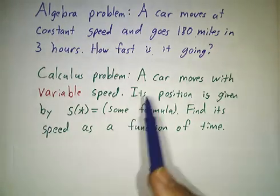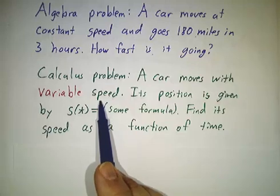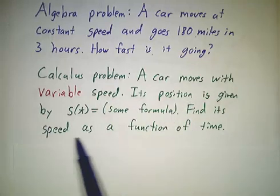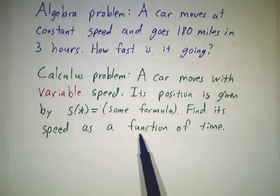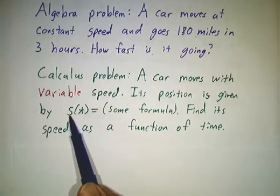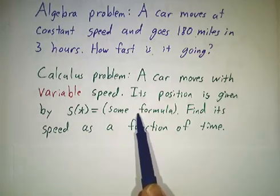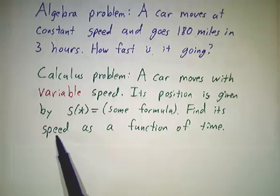So how do you deal with that? If you have a car moving with variable speed, how do you figure out its velocity at any given time from data? And what would the data be? Well, the data might be your position as a function of time. If somebody gives you the position as a function of time, how do you find the speed?